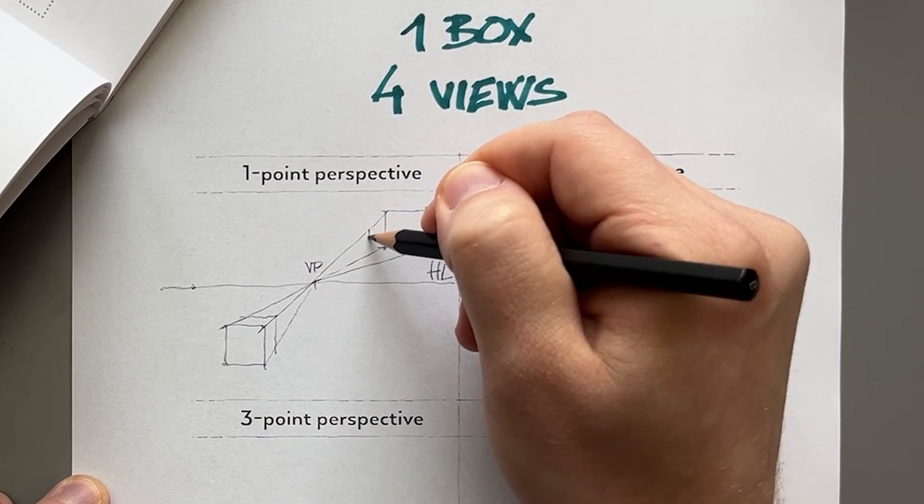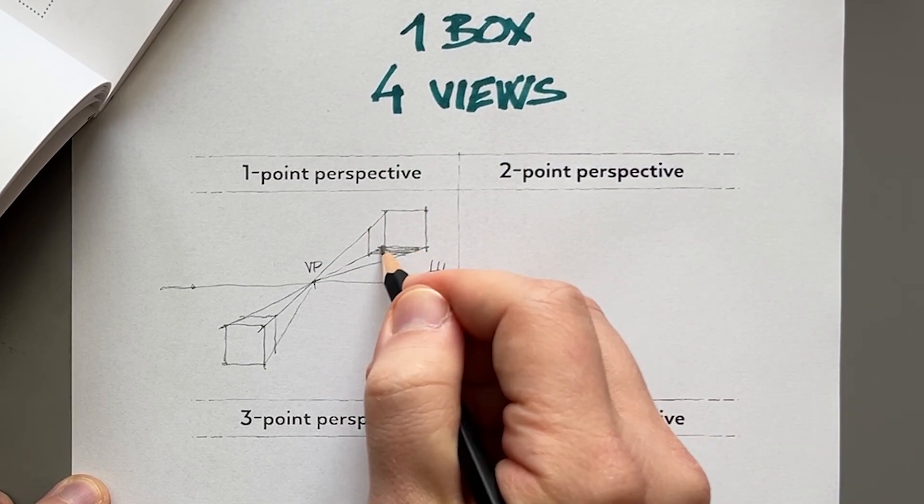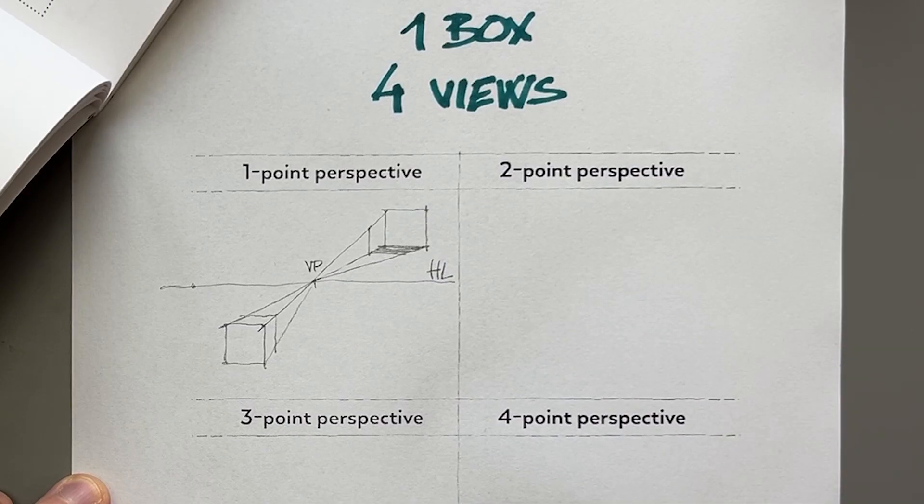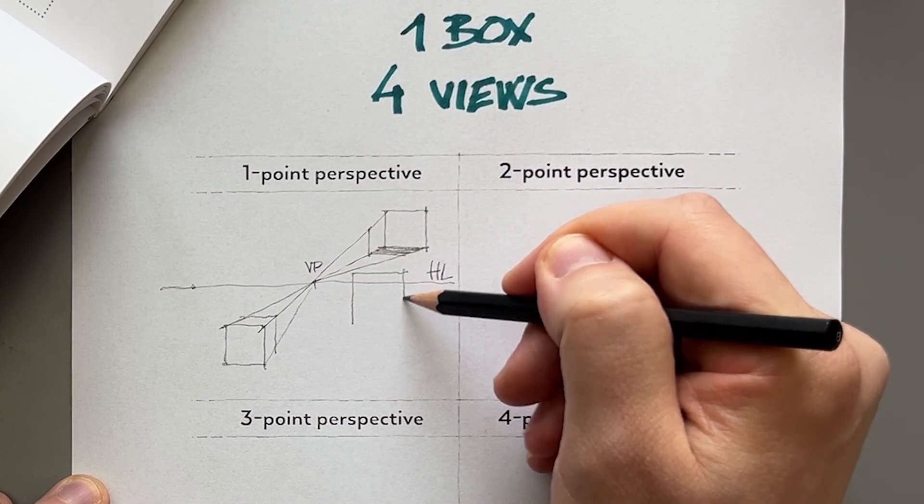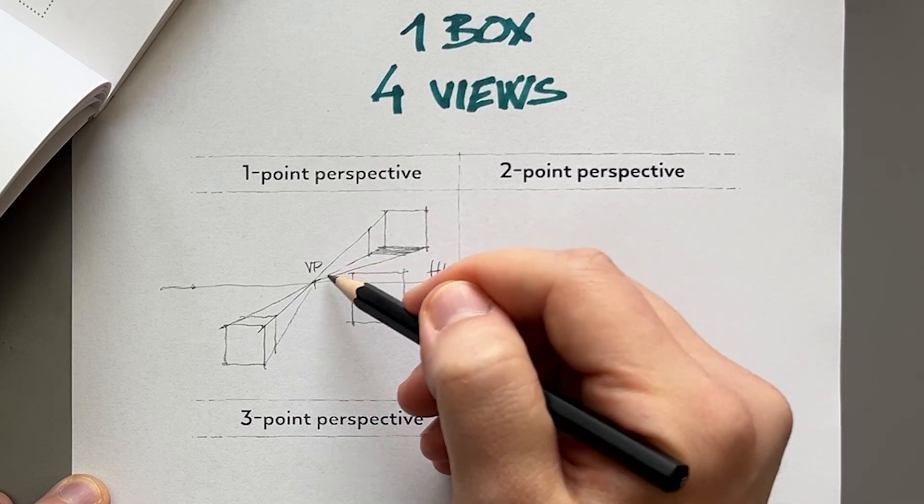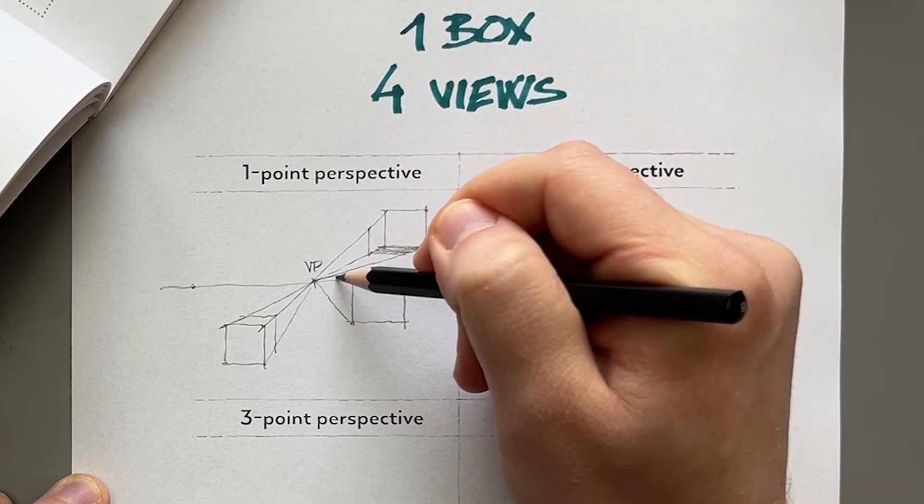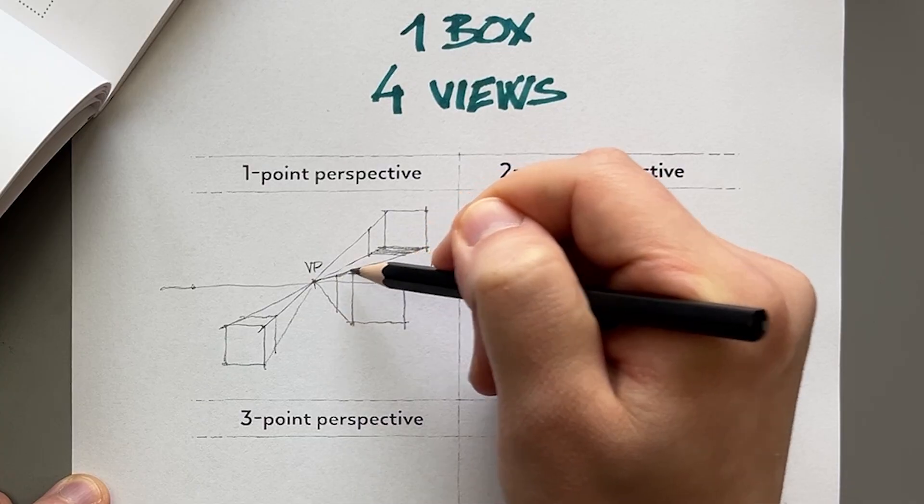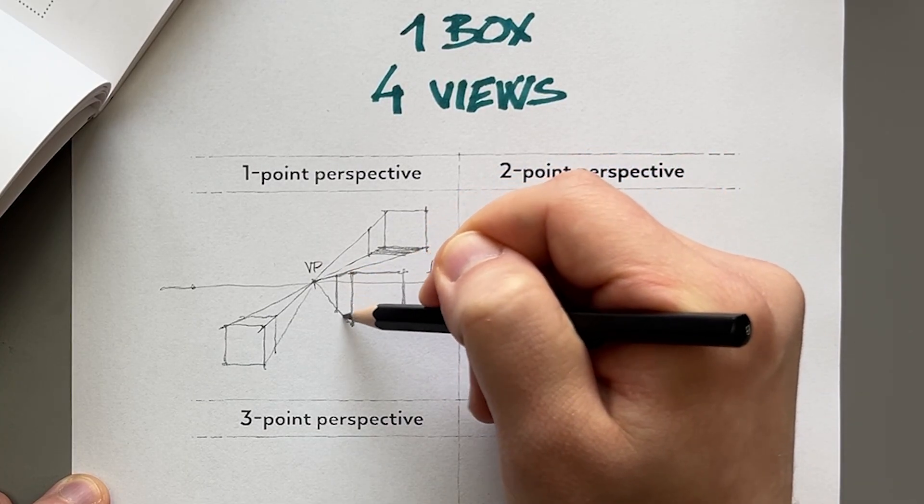This is my vanishing point. So in this case I can see its bottom surface, or optionally I can also draw it in a way that the horizon line cuts through the box, and in this case I cannot really see the top or the bottom surface.